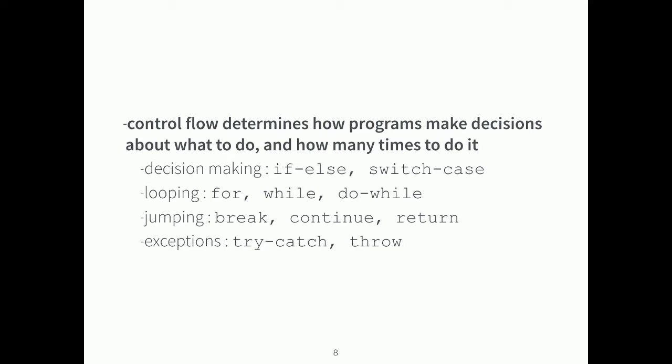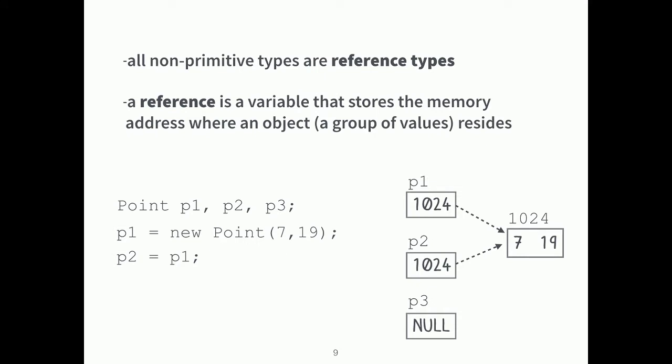We also talked about control flow, which determines how your programs make decisions about what to do and how many times to do it. There's decision making, looping, jumping, and exceptions — we covered all of that. Then we talked about non-primitive types, which we call reference types. A reference is a variable that stores the memory address where an object or a group of values resides.